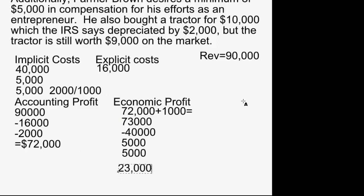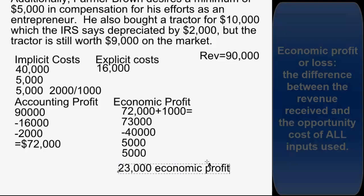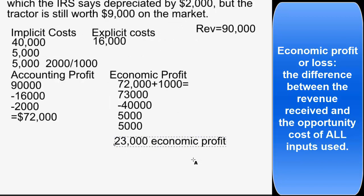That $23,000 is his economic profit. Is that a good thing? Yes — because we've accounted for all the costs of getting into this business, and $23,000 means he did better than he could have done otherwise. This $23,000 in economic profit means that by becoming an entrepreneur, Farmer Brown is making $23,000 more than he could make if he were still doing what he was doing before.